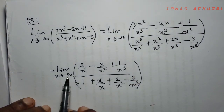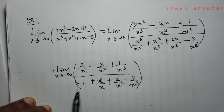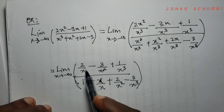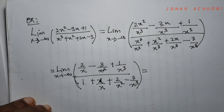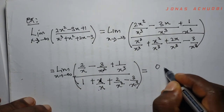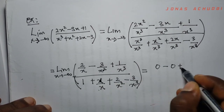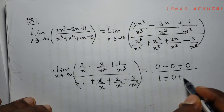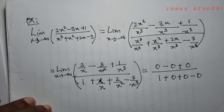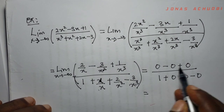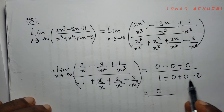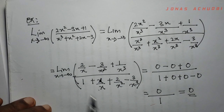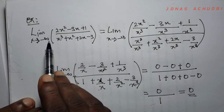We now substitute negative infinity into the function. Each term with x in the denominator — 2/x, 3/x², 1/x³, 1/x, 2/x², 3/x³ — turns to 0. The numerator becomes 0 − 0 + 0 = 0, and the denominator becomes 1 + 0 + 0 − 0 = 1. So 0/1 = 0, meaning the limit of this function as x tends to negative infinity is 0.